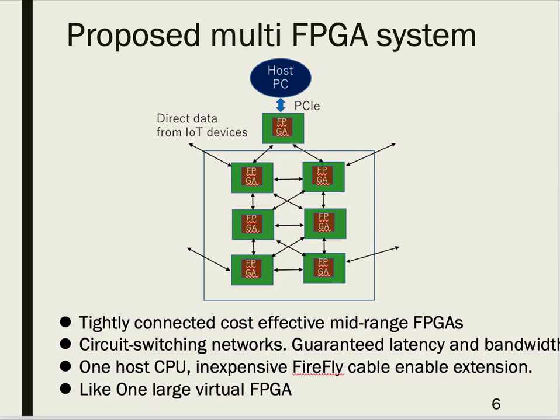This is our proposed Multi-FPGA system: tightly connected, cost-effective, mid-range FPGAs. These FPGAs are connected via circuit-switching networks that guarantee latency and bandwidth. There is only one host CPU, and FPGAs are connected with inexpensive Firefly cables, enabling extension and scalability. We can use this system like one large virtual FPGA.